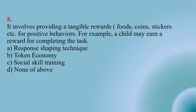Number eight: It involves providing tangible rewards — food, coins, stickers, etc. — for positive behaviors. For example, a child may earn a reward for completing a task. This technique is known as — Option A: response helping technique; Option B: token economy; Option C: social skill training; Option D: none of the above. The right option is B — token economy.